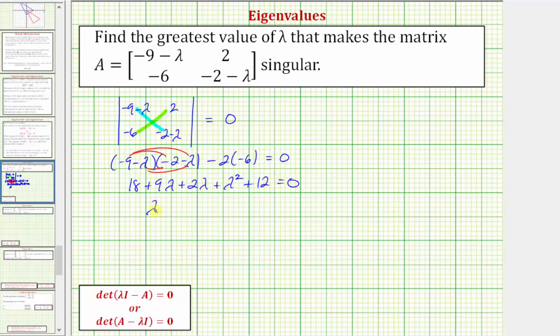Combining like terms, we have lambda squared plus eleven lambda plus thirty equals zero. So we have a quadratic equation which is factorable.